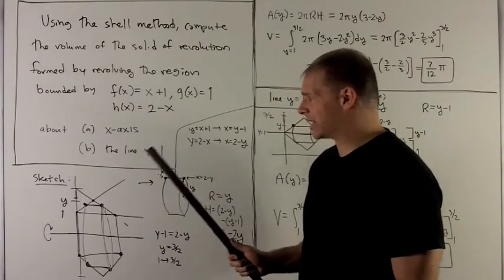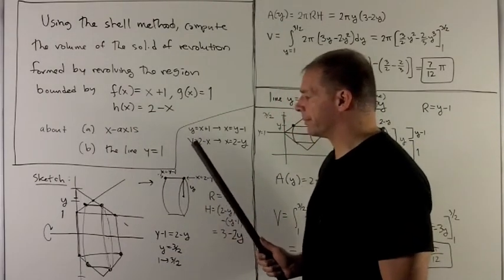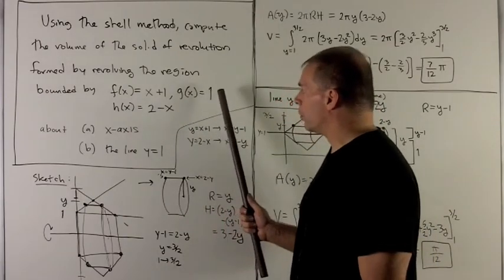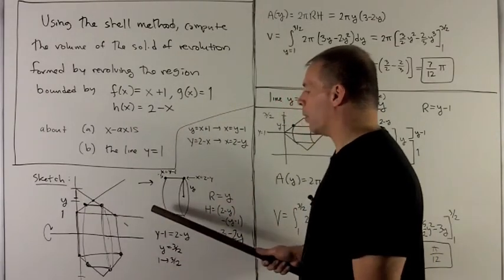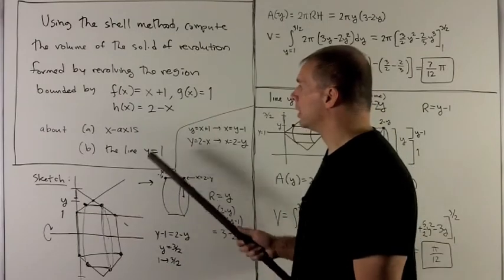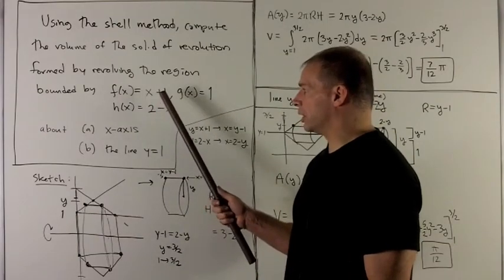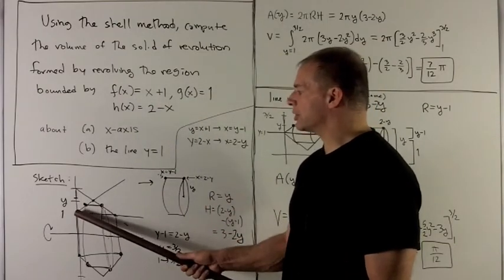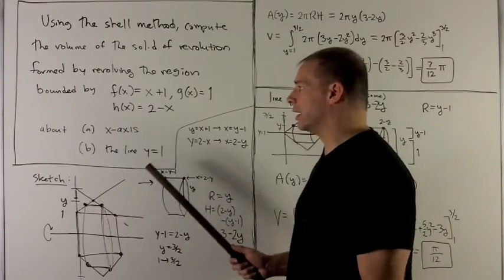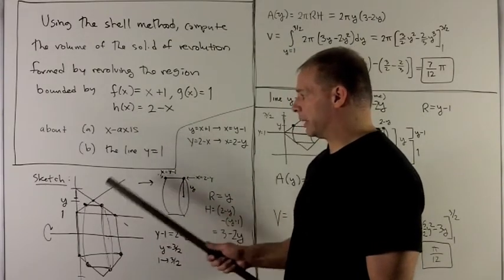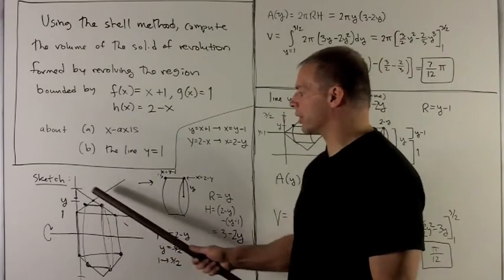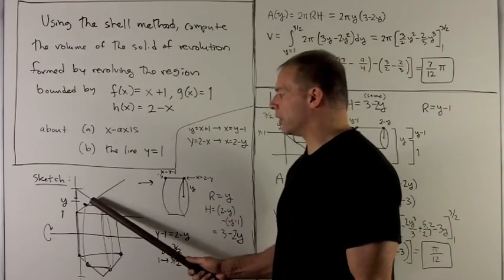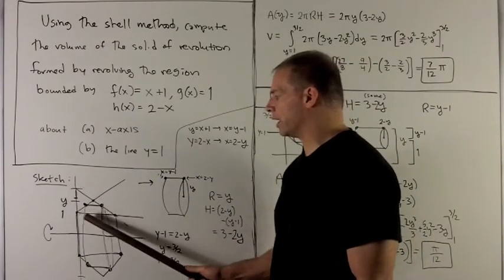First, let's sketch what our region looks like. g(x) = 1 is the horizontal line at y = 1. f(x) is just going to be intercept 1, slope 1, so it looks like that. h(x) is going to be intercept 2, slope minus 1, so it comes down, and we see that our region is this triangle right here.